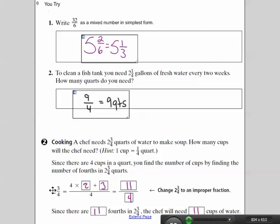So notice that my denominator here is 4. So 4 times 2 is 8. 8 plus 3 is 11. So my answer is 11 fourths. So since there are how many fourths? There are 11 fourths and 2 and 3 fourths. The chef will need 11 cups of water.